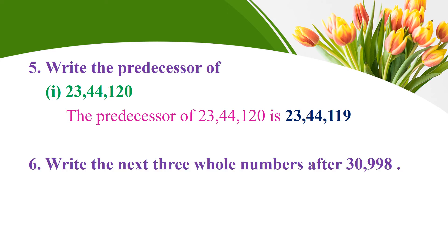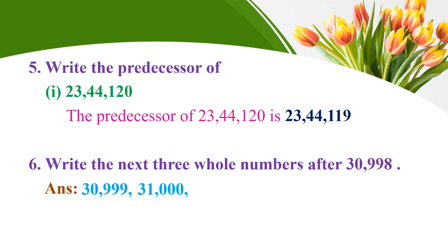Write the next three whole numbers after 30,998 — the answers are 30,999, 31,000, and 31,001.